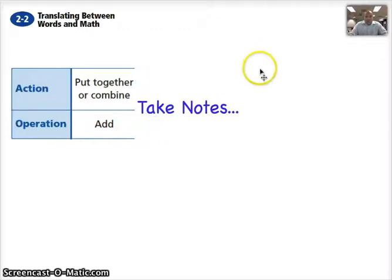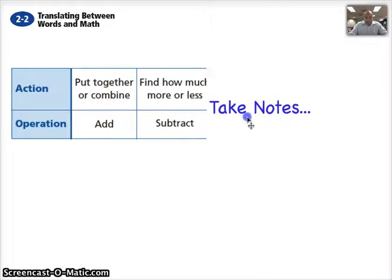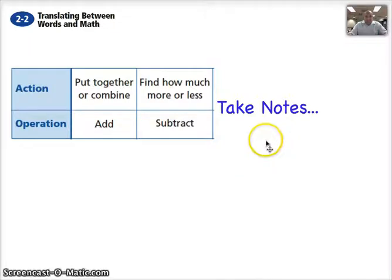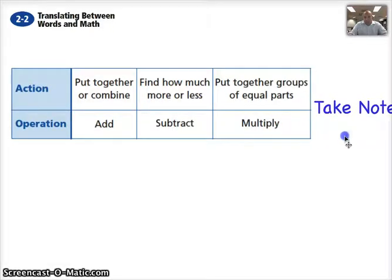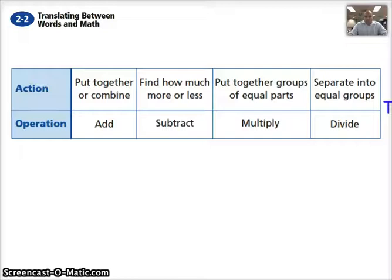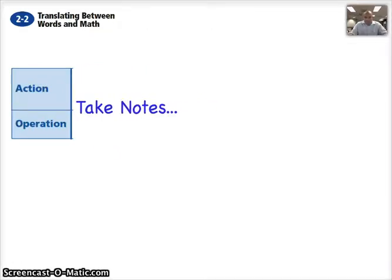First of all, when a problem asks us to combine some numbers together or put together some numbers, we need to add. A problem may ask us to find out how much more or how much less another number is. In that case, we need to subtract. When we're dealing with groups and putting together groups that have equal parts to them, we need to multiply. And when we're talking about these groups and trying to separate them into equal groups, we're talking about division. You'll have a better understanding as we go to the next slide and look at our examples.